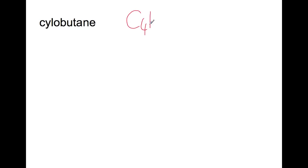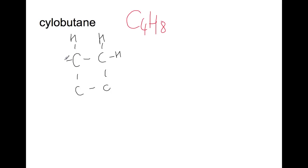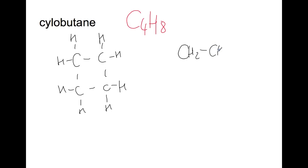We're going to do the same for a different family — cyclobutane, which is C4H8. The 'cyclo' part means it's in a ring. Here is our full structural formula showing all of the bonds. For the shortened structural formula we take each corner in turn: CH2, CH2, CH2, CH2.